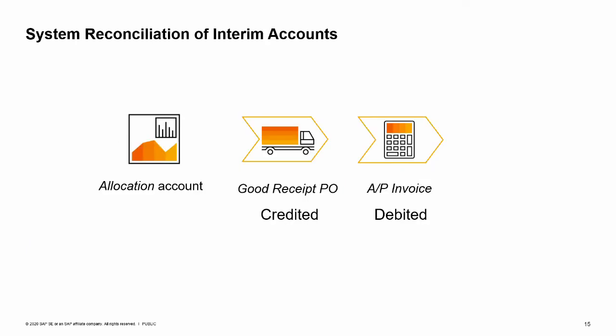SAP Business One automatically reconciles the following interim accounts: allocation account, expense clearing account, stock in transit account, and the work in process inventory account. In some localizations, the deferred tax account — relevant for Austria, Costa Rica, France, Guatemala, Italy, Mexico, South Africa, and Spain — as well as the down payment interim account and down payment clearing account. For example, if your company uses the perpetual inventory system, the system automatically reconciles the allocation account, which is credited when you issue a goods receipt PO and debited in an AP invoice.